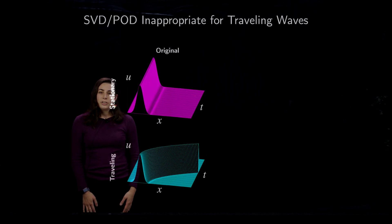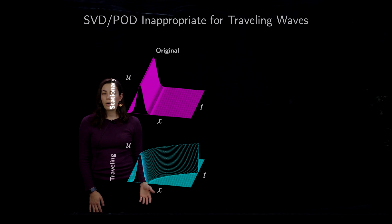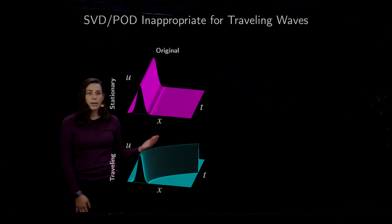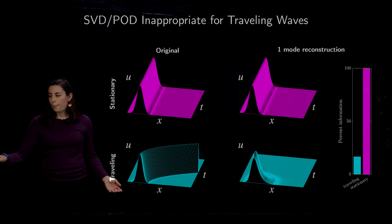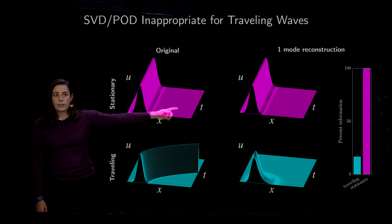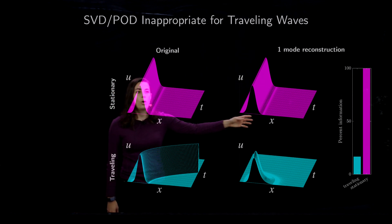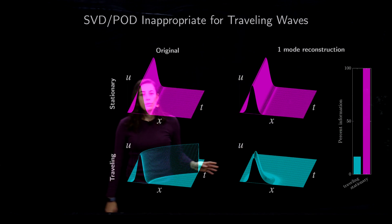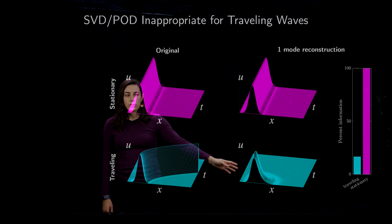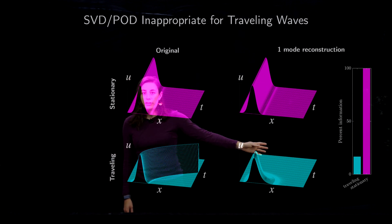The problem is that SVD or POD does not work with traveling waves. So here I have a stationary wave that's shown in pink, and I have the same soliton wave that is traveling in space and time. When I go to decompose that wave into one mode, we can see that the stationary wave is very well represented, and almost all of the information is captured, as you can see here, almost 100%. Whereas with the traveling wave, one mode reconstruction gives us a very poor representation of the wave, and we also don't capture very much of the energy.